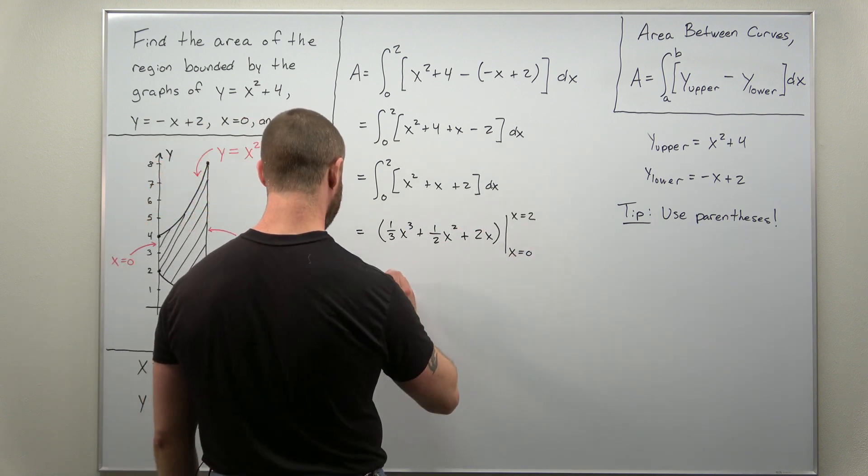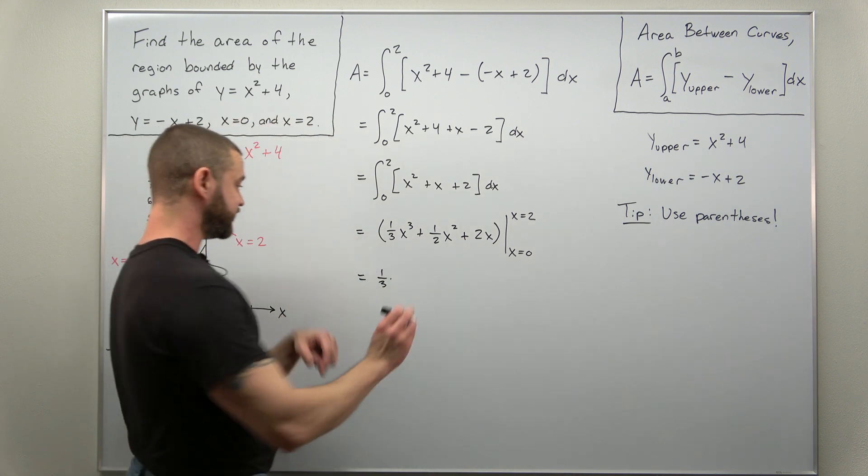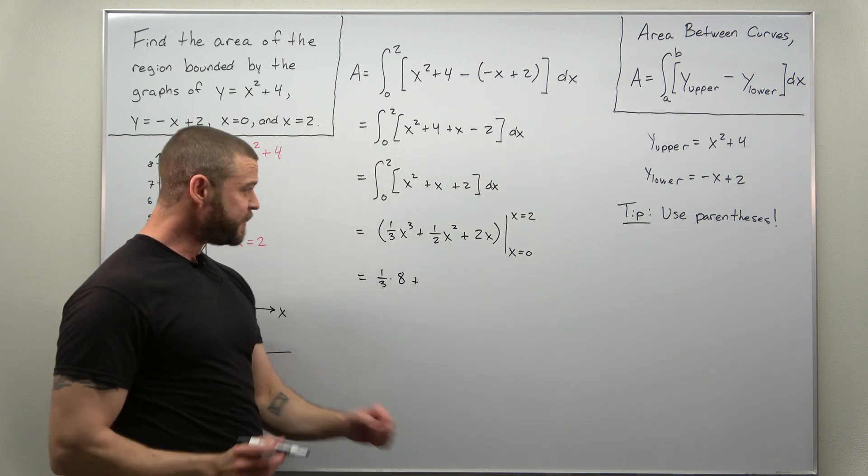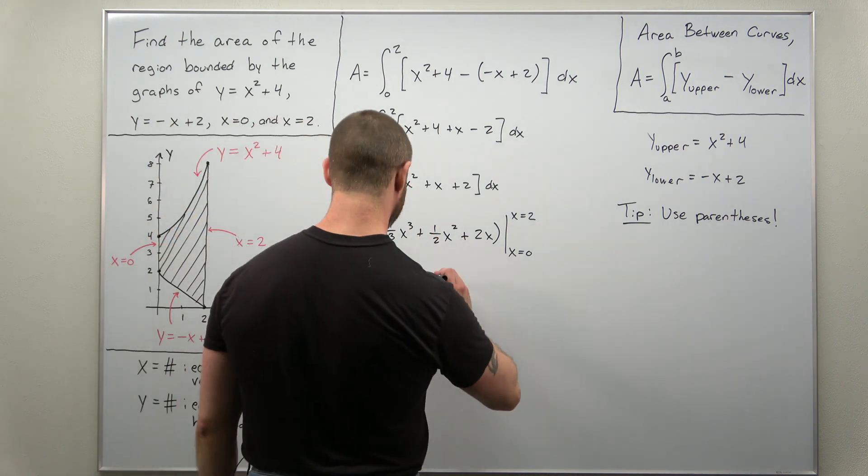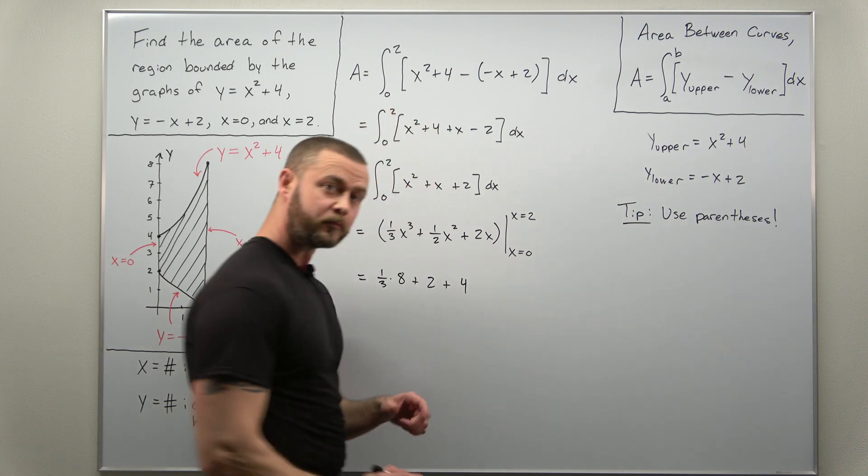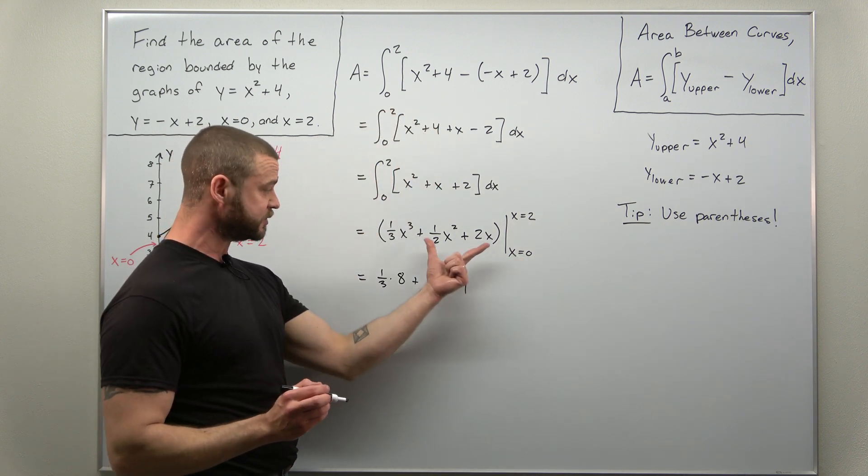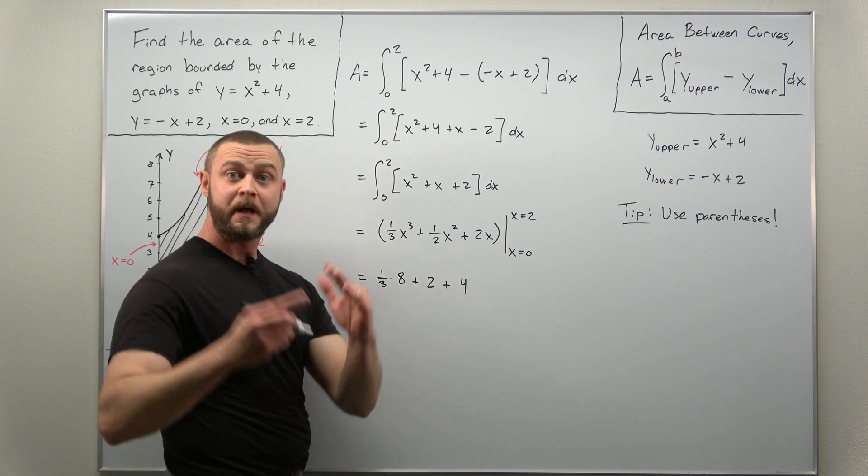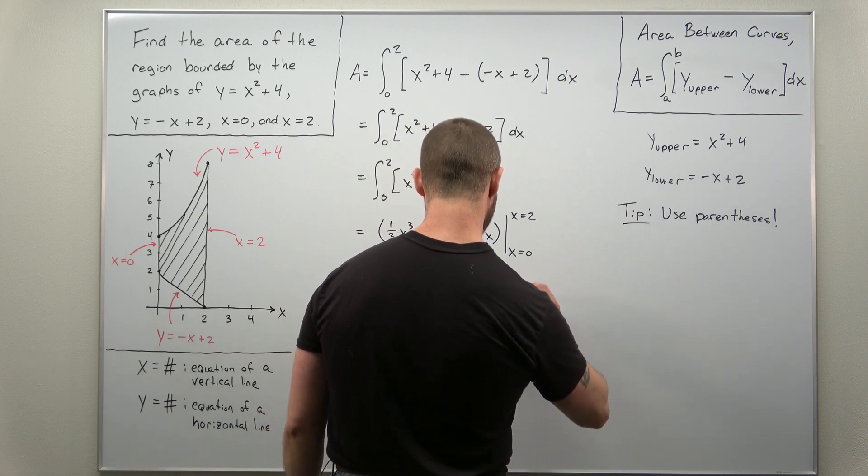So it looks like we're going to get one-third, 2 cubed that's going to be 8, you can kind of do some of the basic math here, 2 squared that's going to be 4 divided by 2 that'll be plus 2, and then plug 2 in you'll get plus 4. And again for clarity we are plugging in x equals 0, so we're subtracting when we evaluate this at 0, but that's just going to evaluate to 0, so let's write that for emphasis.